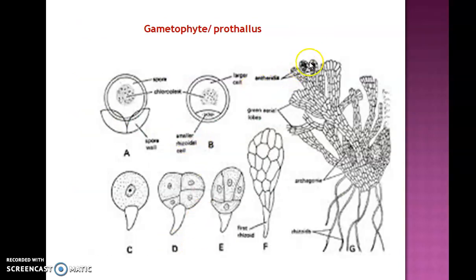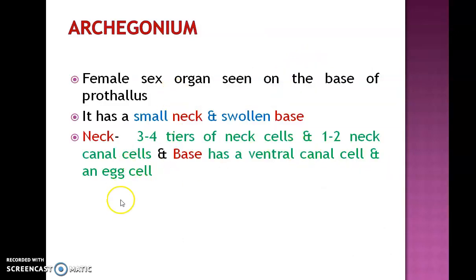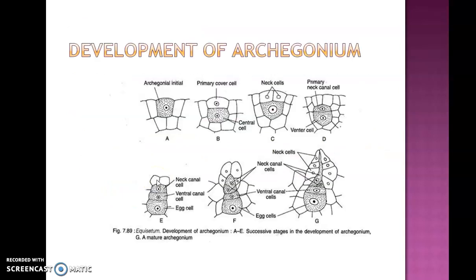Structure of archegonium: the archegonium is a female sex organ which has a small neck and a swollen base. The neck is surrounded by neck cells and consists of one to two neck canal cells. The base consists of two cells — a small ventral canal cell and an egg cell. The archegonium is flask-shaped with a neck and a venter. Inside the venter, the ventral canal cell and egg cell are present.